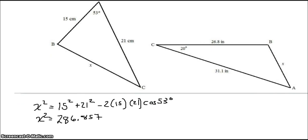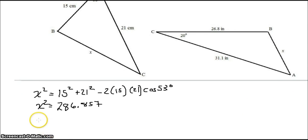cosine of 53 degrees. That results in 286.857. Then we need to take the square root of 286.857. 16.9. And that will be centimeters, is the length of side X.